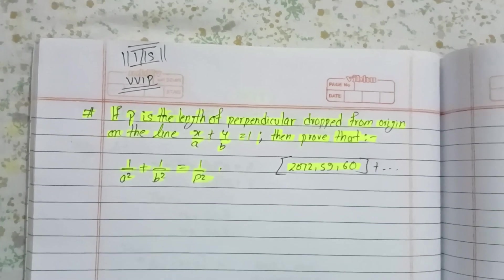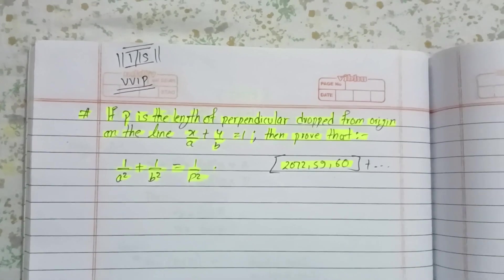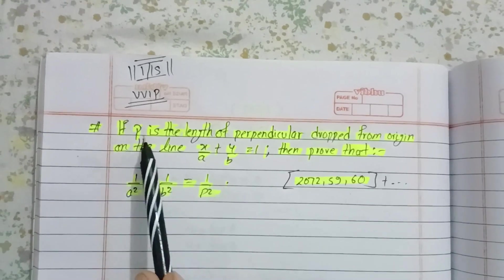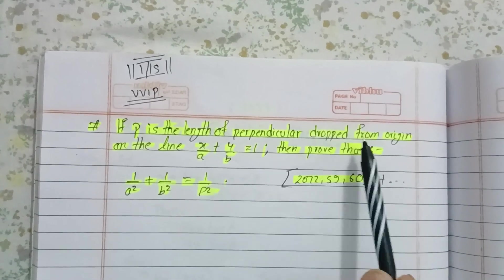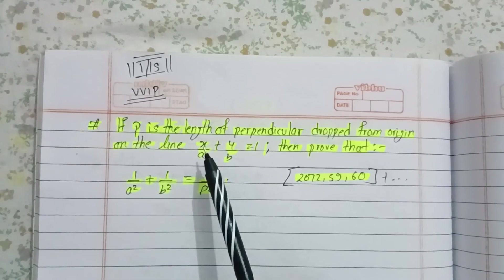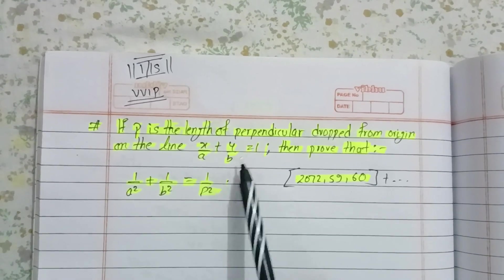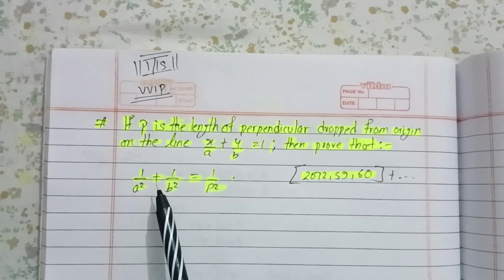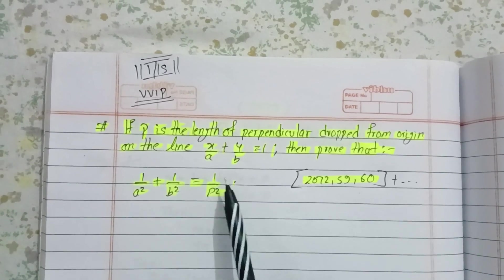The question is: If p is the length of perpendicular dropped from origin on a line x by a plus y by b equals to one, then prove that one by a square plus one by b square equals to one by p square.